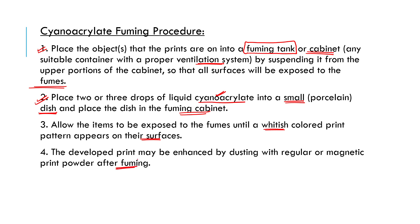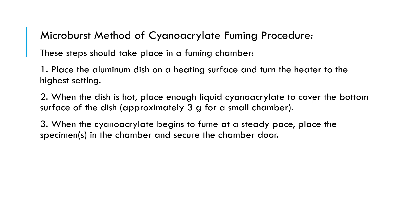You can also use the microburst method. Place an aluminum dish on the heating surface and turn the heater to the highest setting. When the dish is hot, add enough liquid cyanoacrylate to cover the bottom surface of the dish — approximately 3 grams for a small chamber.